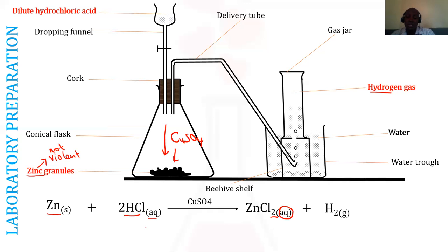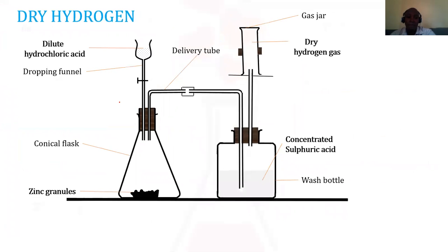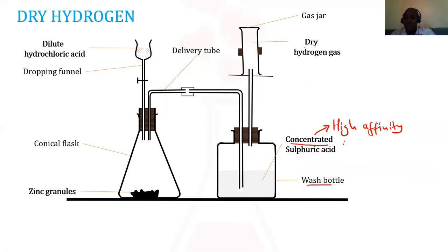We also need to prepare dry hydrogen, which is a common exam question. Our hydrogen gas can contain water vapor, so to prepare dry hydrogen we introduce the gas into a wash bottle containing concentrated sulfuric acid — sulfuric acid with little water content. Concentrated sulfuric acid has one key property: it has a high affinity for water, making it hygroscopic.